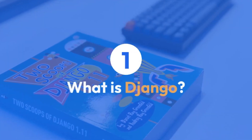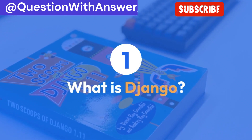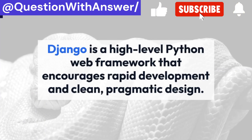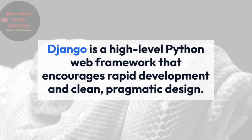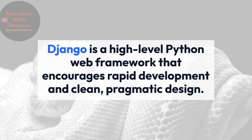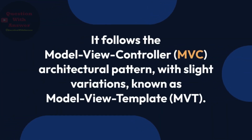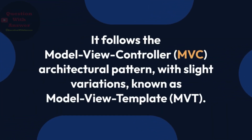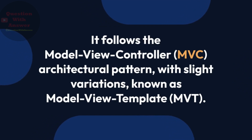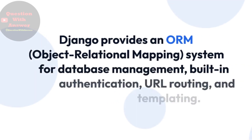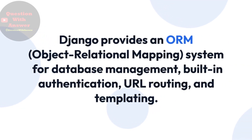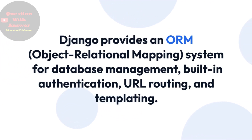Question 1: What is Django? Answer: Django is a high-level Python web framework that encourages rapid development and clean, pragmatic design. It follows the Model-View-Controller or MVC architectural pattern, with slight variations, known as Model-View-Template or MVT. Django provides an ORM or object-relational mapping system for database management, built-in authentication, URL routing, and templating.